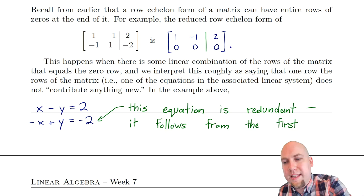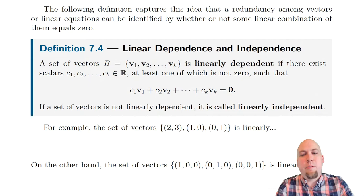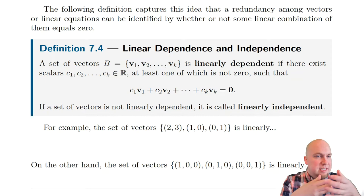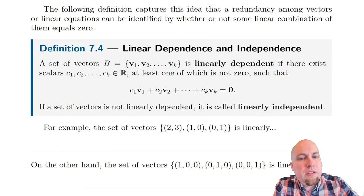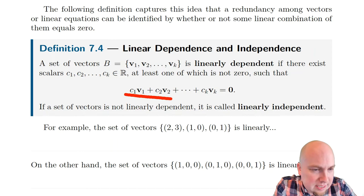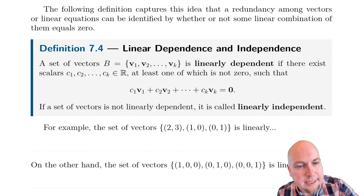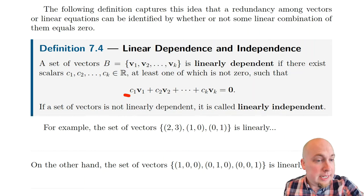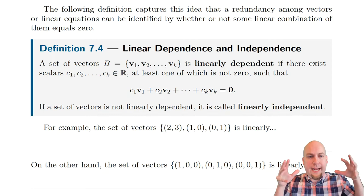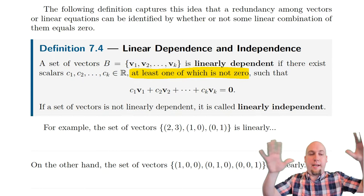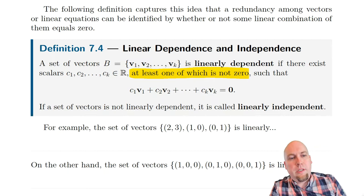So this is the big definition for today's class. We say that a set of vectors is linearly dependent if there exists some linear combination of them that equals the zero vector — with at least one coefficient that is not zero. Without that technicality, you could always just set all coefficients to zero and trivially get the zero vector, which is not interesting. So we need a linear combination that's not just the trivial all-zero combination. If you can find such a non-trivial linear combination that equals zero, then the set is linearly dependent.